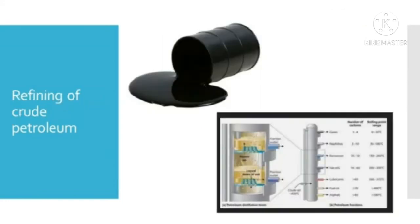The crude petroleum obtained from the well is a dark-colored viscous liquid which contains many impurities such as water, solid particles and gases like methane and ethane. To make it useful for different purposes, it must be separated into various components. The process of separating petroleum into useful by-products and removal of undesirable impurities is called refining.